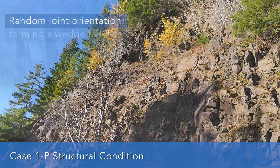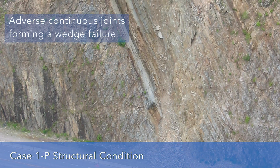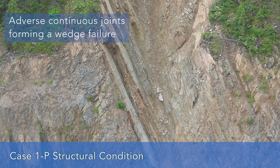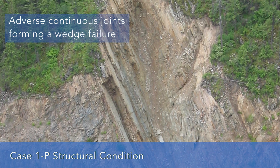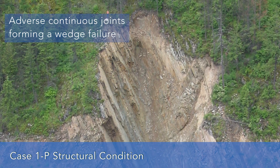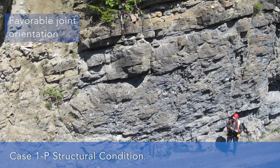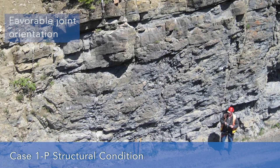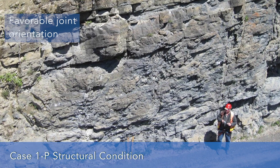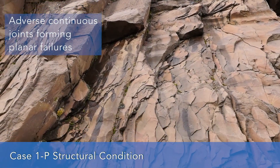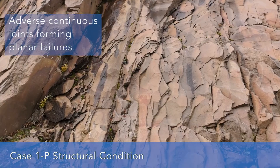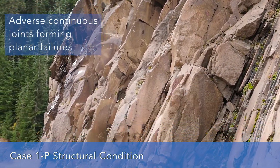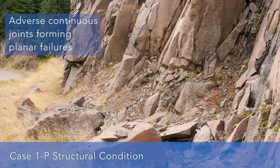The scores are broken down into four categories. At the lowest end, discontinuous joints with favorable orientations would rate as three points. At the other end of the spectrum, continuous joints — those greater than 10 feet — with adverse orientations or dipping out of the slope would rate as 81 points. At this site we have joints that are greater than 10 feet and also dipping out of the cut face, so this slope would rate 81 points.